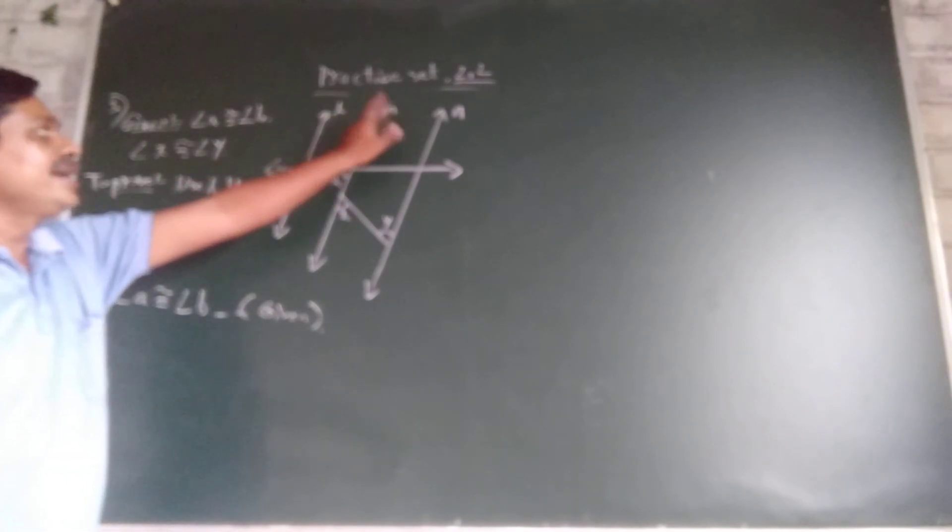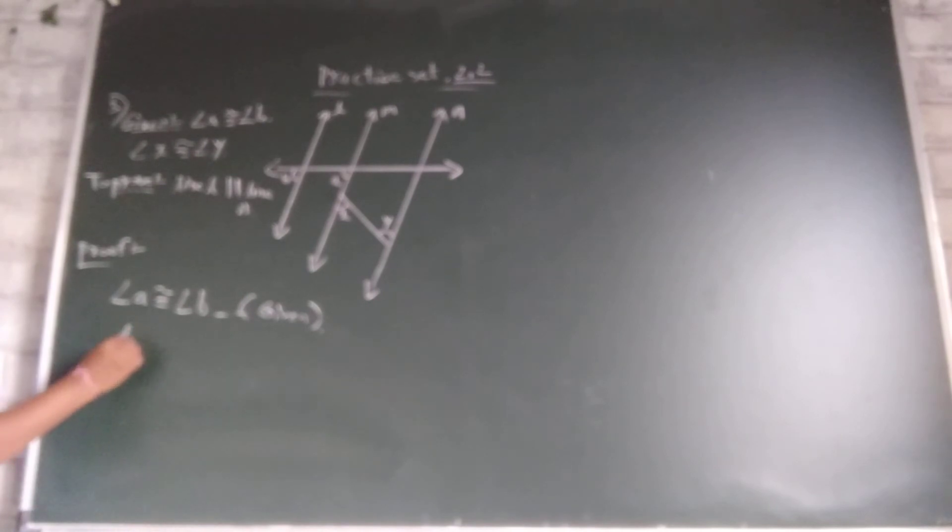Therefore, line L and M are also congruent. L parallel to line M, equation 1.